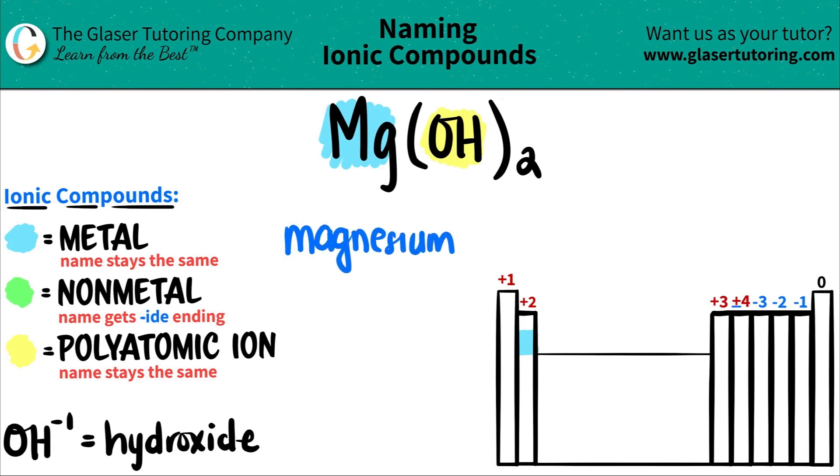Then comes my polyatomic ion, OH. Polyatomic ion names stay the same, so that's pretty easy, but you just have to memorize them. So it's just going to stay hydroxide.